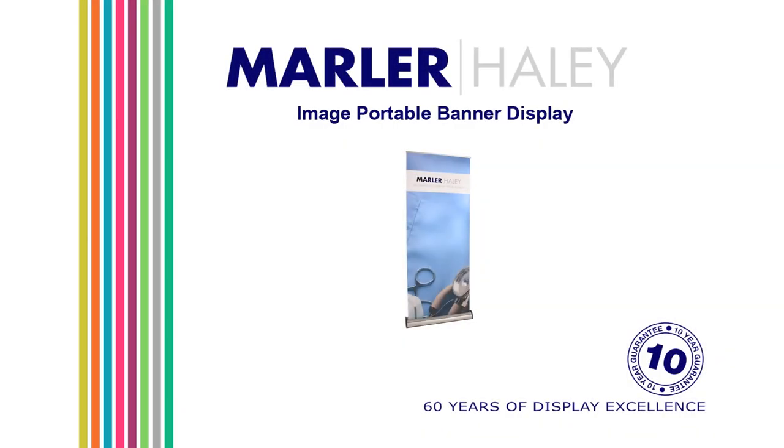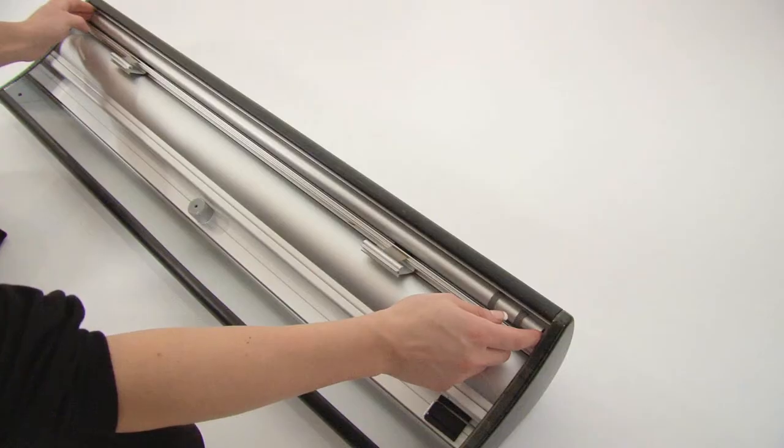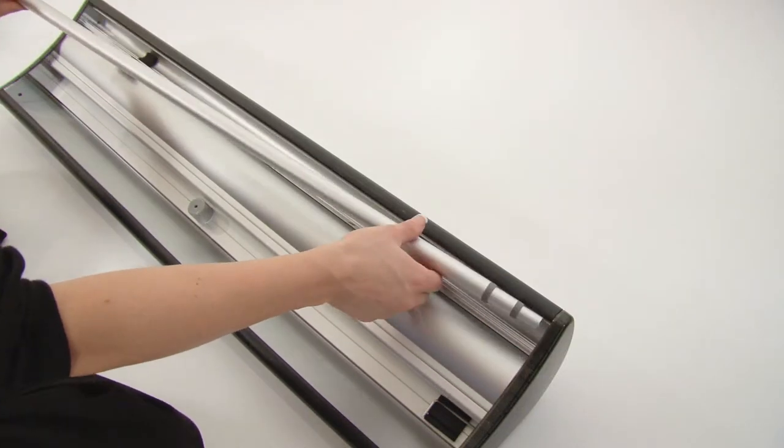Marla Haley Image is Marla Haley's premier interchangeable cassette banner. The pole can be found on the underside of the base unit.